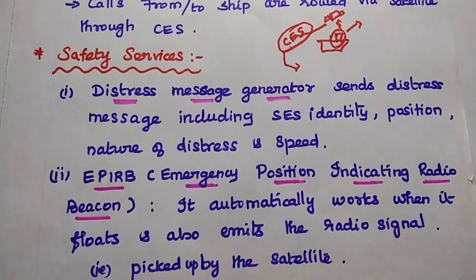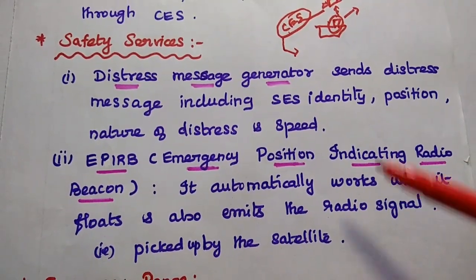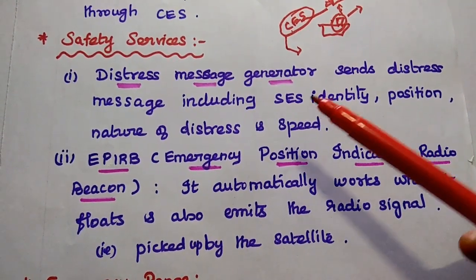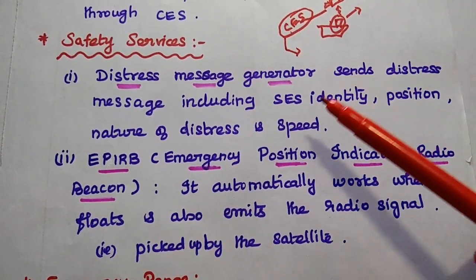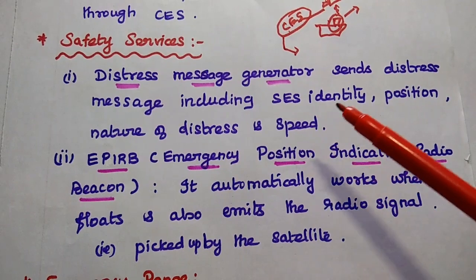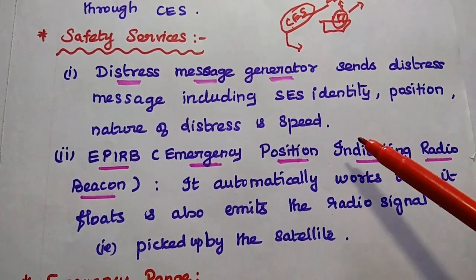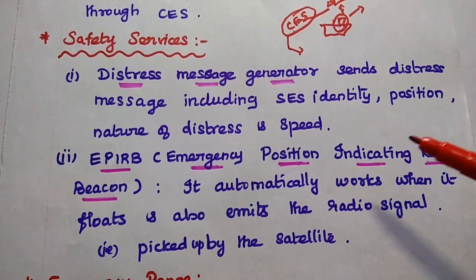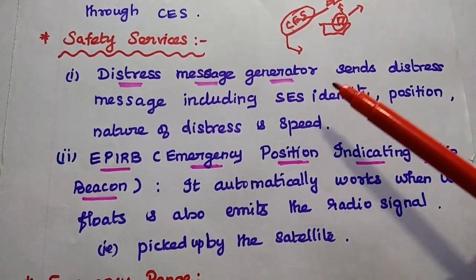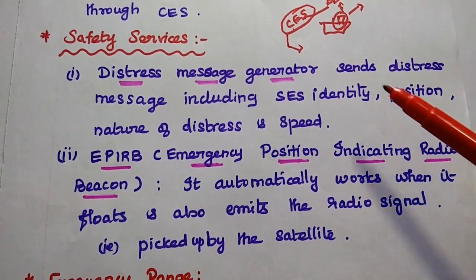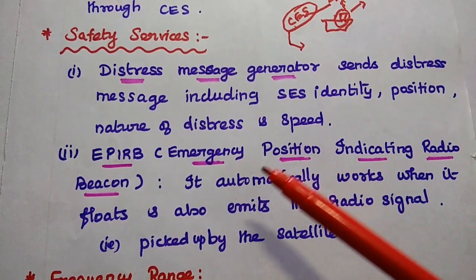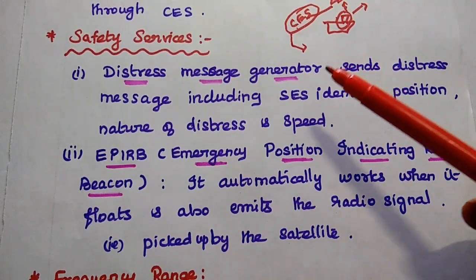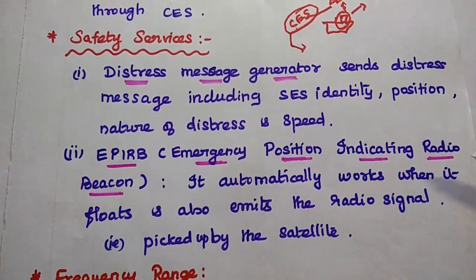Next are the safety services provided by Inmarsat. There are two important devices used to provide safety services. The first is the distress message generator. It sends a distress message including CES identity, position, nature of distress, and speed. In case of any emergency — for example, if the ship is sinking — this distress message generator immediately sends the message with those details to the Inmarsat satellite, from where the information reaches the CES and immediate action can be taken to recover the people.